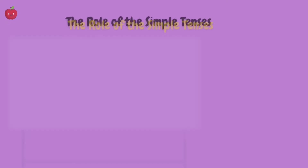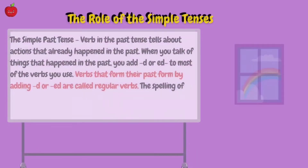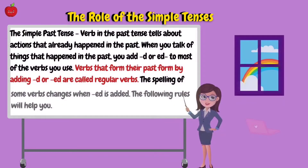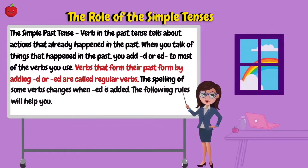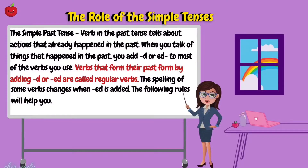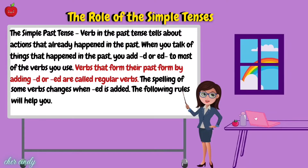Now let's have our lesson for today: the roles of the simple tenses. The simple past tense tells about actions that already happened in the past. When you talk of things that happened in the past, you add D or ED to most of the verbs you use. Verbs that form their past form by adding D or ED are called regular verbs. The spelling of some verbs changes when ED is added. The following rules will help you.